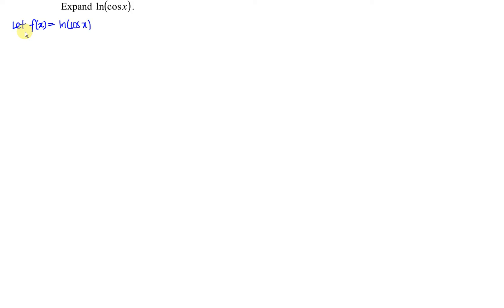First, we let f(x) be ln(cos x). So at point x equal to 0, we have cos(0) which is equal to 1, and ln(1) is equal to 0. Then we differentiate with respect to x. Differentiating the log function, we get the reciprocal: 1 over cos(x). Don't forget to differentiate cos(x) as well using the chain rule, so we have negative sin(x). This is equivalent to negative tan(x). At point x equal to 0, tan(0) is equal to 0, so negative 0 is still 0.